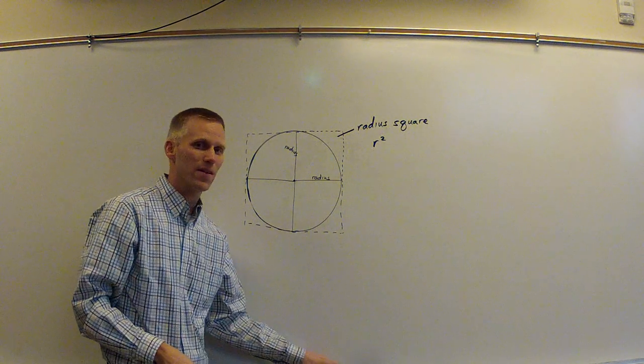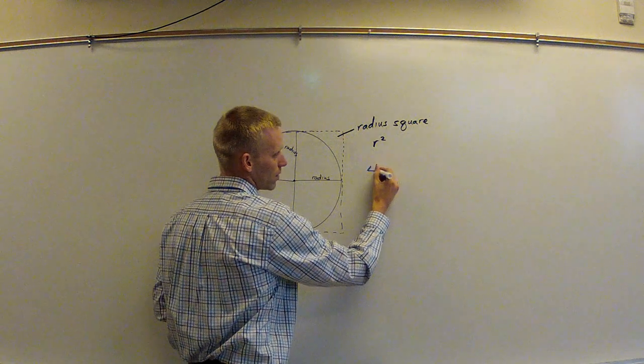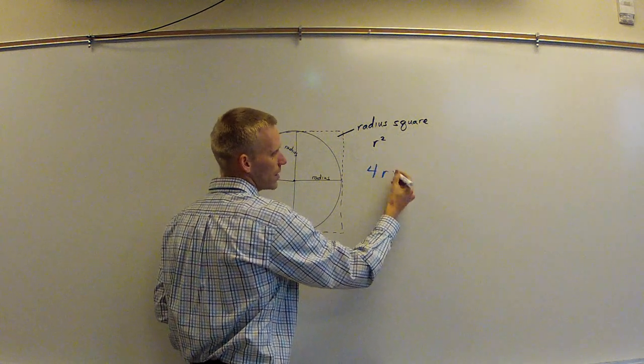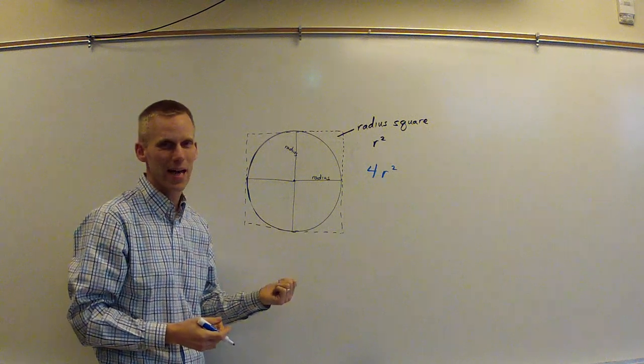Now, this would lead us to believe that the area formula for a circle is four of these radius squares. But you know that this is not exactly accurate.